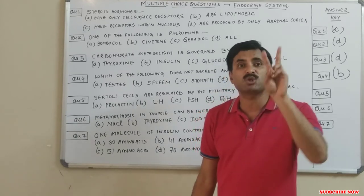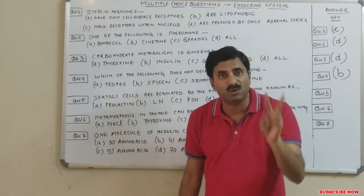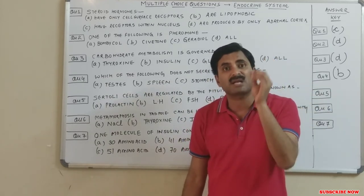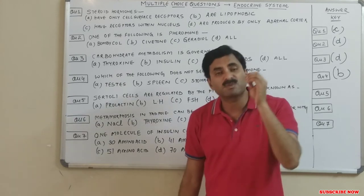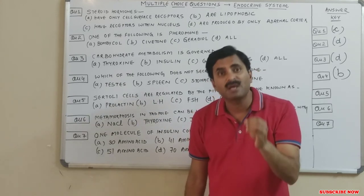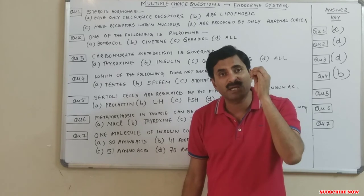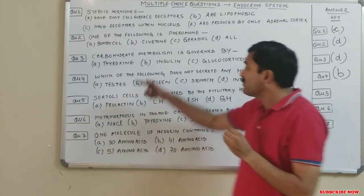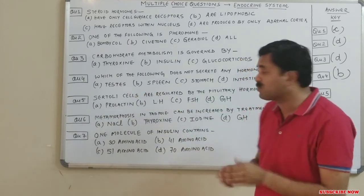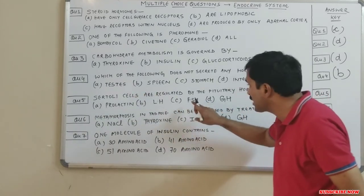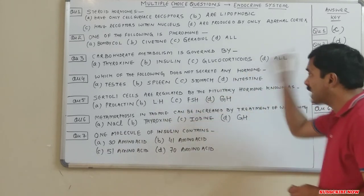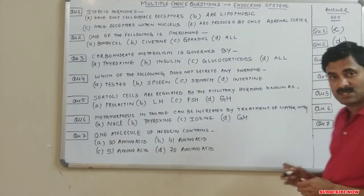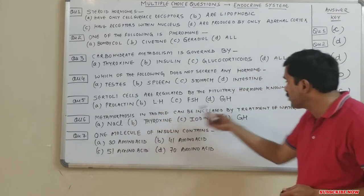In the seminiferous tubules, two cell types are found: large Sertoli cells and small spermatogonia cells. Spermatogonia form sperm, while Sertoli cells are nurse cells providing nutrition to developing sperm. Sertoli cells are regulated by FSH, so the answer for question five is C: FSH.